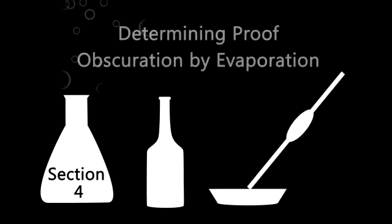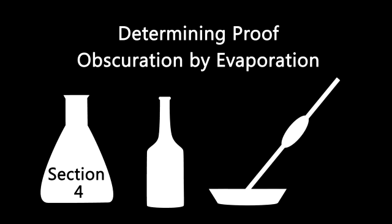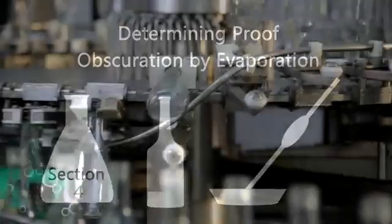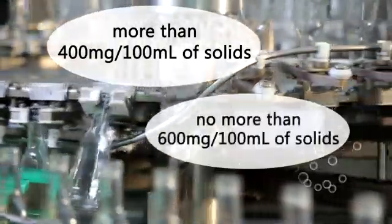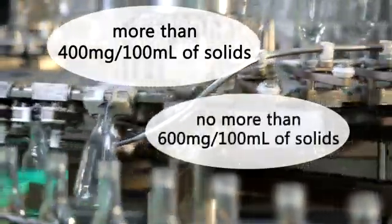Let's look at how to determine proof obscuration by evaporation. If your spirit contains more than 400, but not more than 600 milligrams of solids per 100 milliliters of spirits, you must determine true proof.